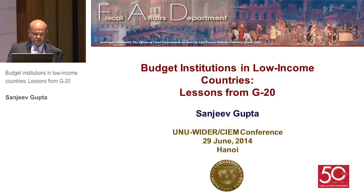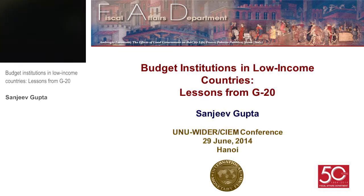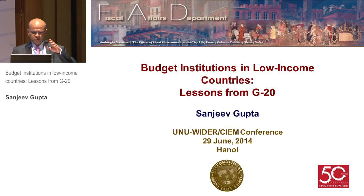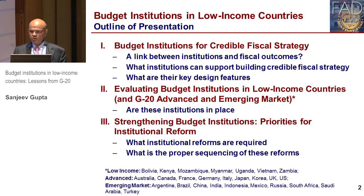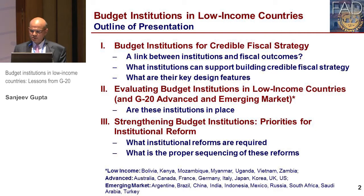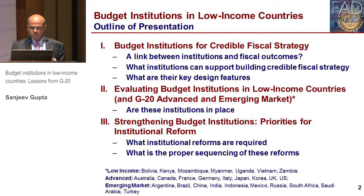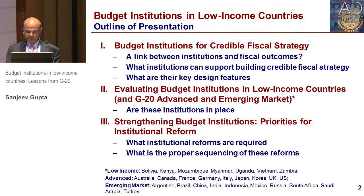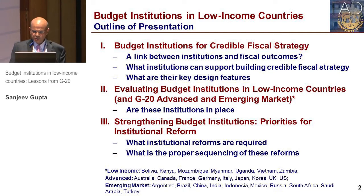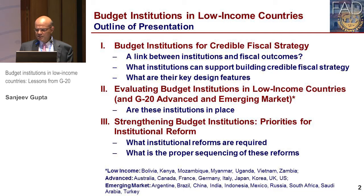So what is the outline of the presentation? I'm going to basically focus on those budget institutions which are needed for credible fiscal strategy, and also show what are the links between budget institutions and fiscal outcomes, and what kind of institutions we found are needed for supporting credible fiscal strategy and what are the key design features.